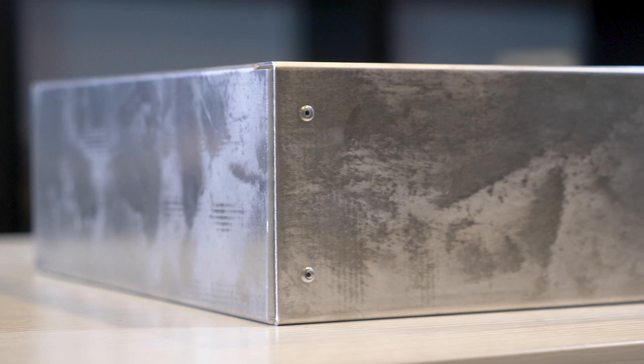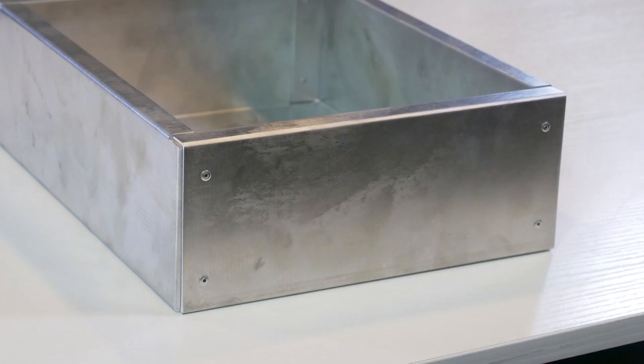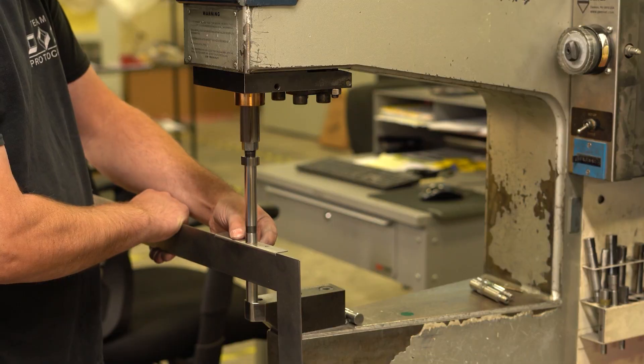Rivets permanently fasten two metal parts together through a concentric hole. We have other fastening methods here at Proto-Case, welding and self-clinching fasteners. Similar to welding, rivets are a permanent fastening method meaning that two parts cannot be disassembled once they are riveted together.